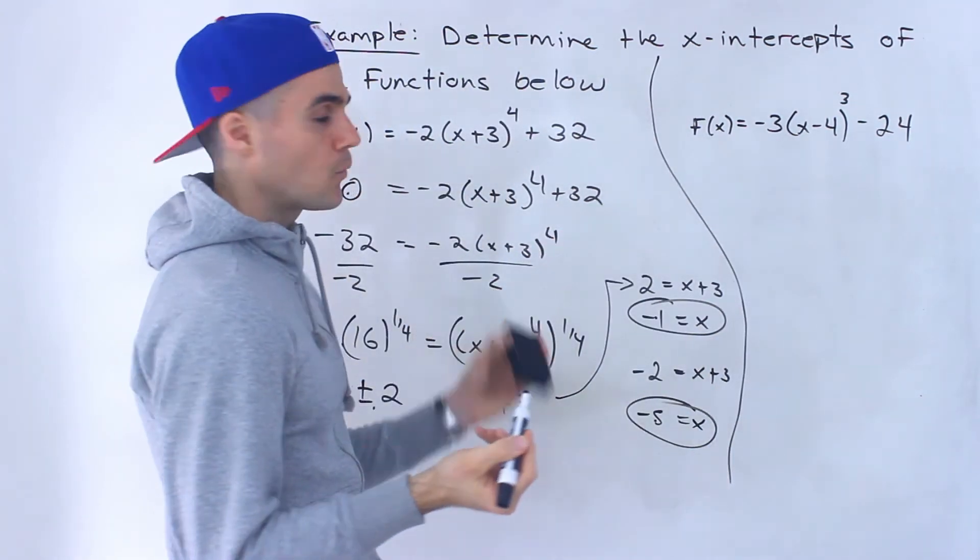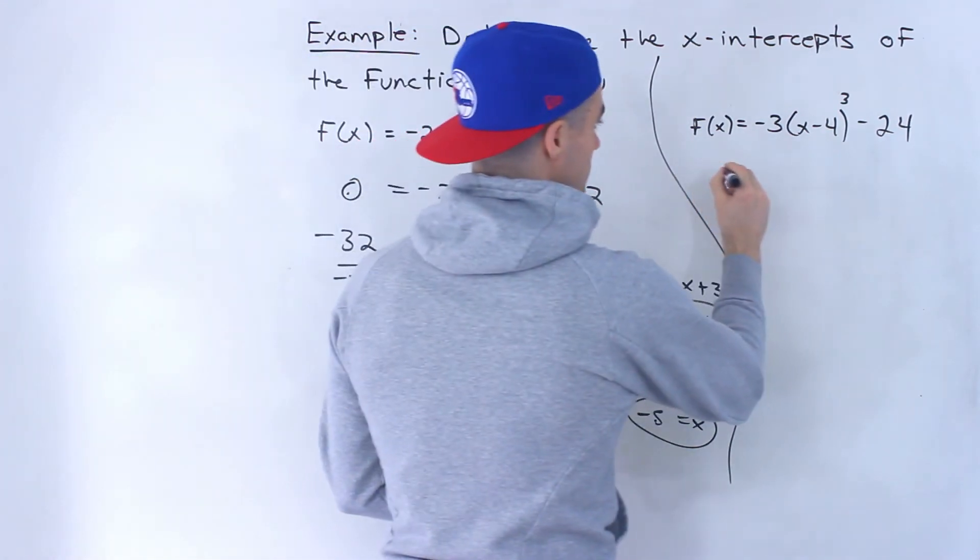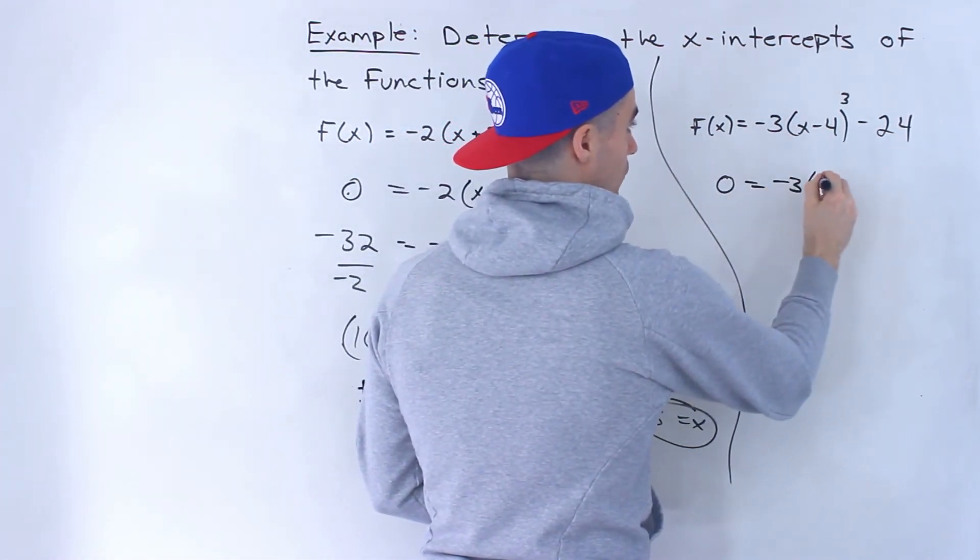And then over here, we know there's going to be one x-intercept. So just a matter of finding it, same thing. Let y = 0.